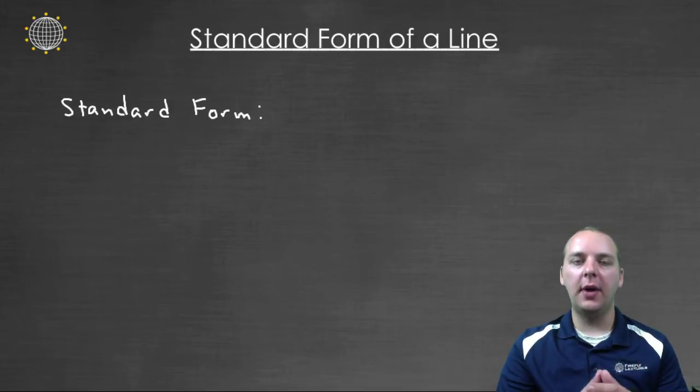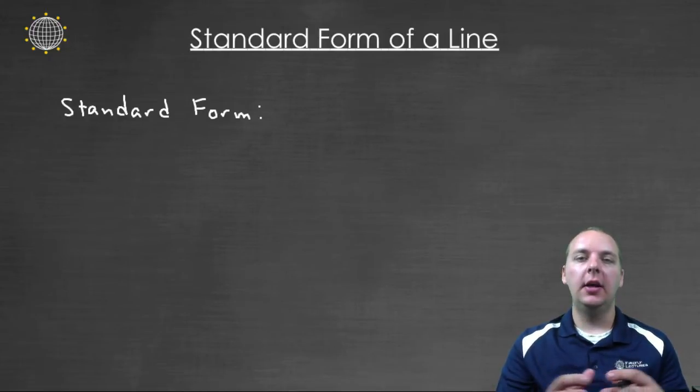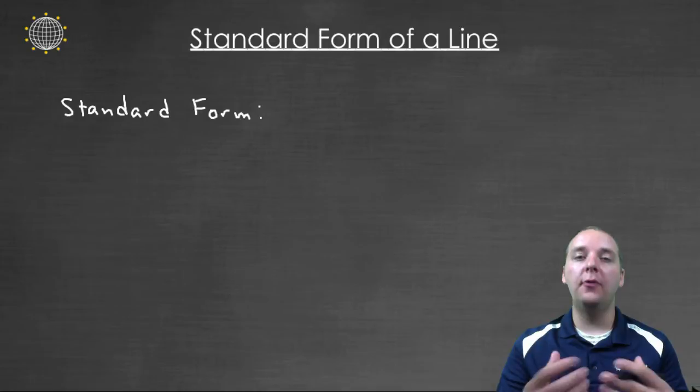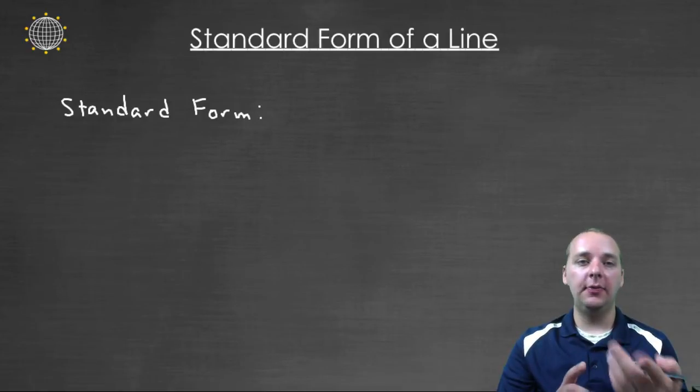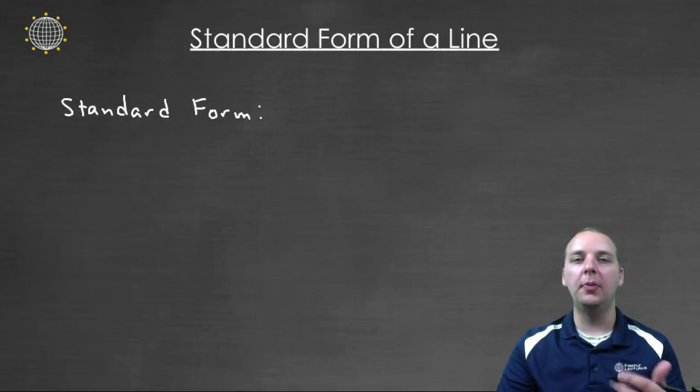Often times it's better to write the equation of a line in one format or another for various reasons. And that format we call a form, and there's a few different forms of a line. There's slope-intercept form, there's point-slope form, and the last common one is this one called standard form.